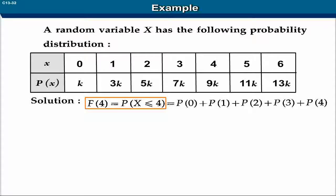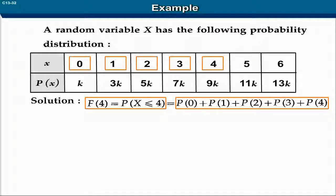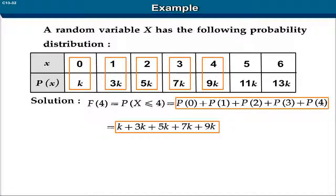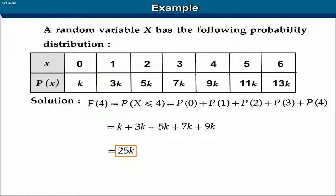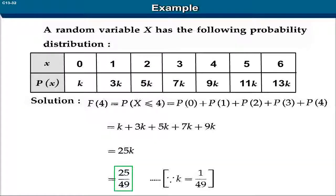F(4) is equal to P(X ≤ 4), which is equal to P(0) plus P(1) plus P(2) plus P(3) plus P(4), equal to k plus 3k plus 5k plus 7k plus 9k, equal to 25k, which is equal to 25 upon 49.